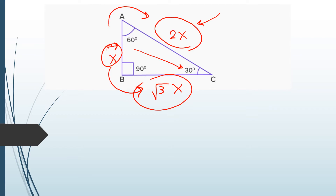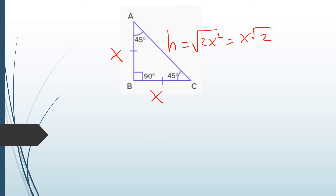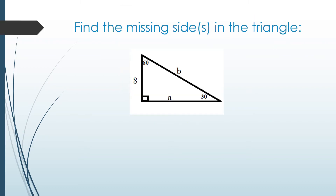For the 45-45 triangle, the square root of the hypotenuse squared equals x√2, so if each leg is x, the hypotenuse is x√2. The ratio between the sides of the 45-45 triangle is 1 to 1 to √2.